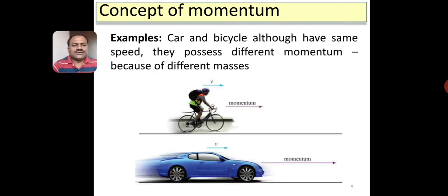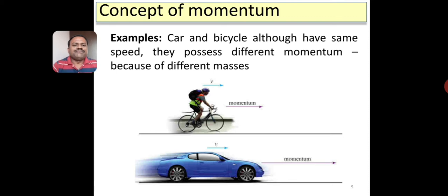Consider a simple example where a bicycle and a car are both moving with the same velocity in a particular direction. They possess different momentum because the cycle has less mass whereas the car has more mass. Though velocities are the same, their momentum will be different because of the difference in masses. Similarly, if you take two cars, one moving with 10 meter per second and another moving at 50 meter per second, then the car moving faster will have more momentum.